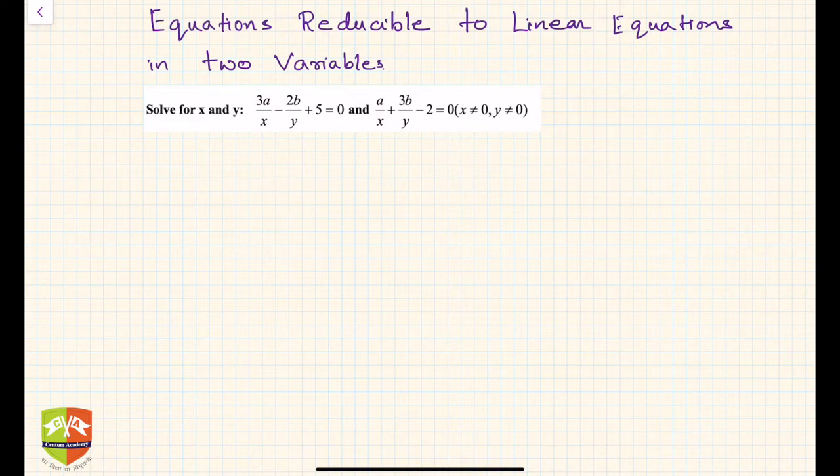If you can see here in the question it's given that solve for x and y: 3 upon x minus 2b upon y plus 5 equals 0, and a upon x plus 3b upon y minus 2 equals 0. It is given that x is not equal to 0 and y is not equal to 0.